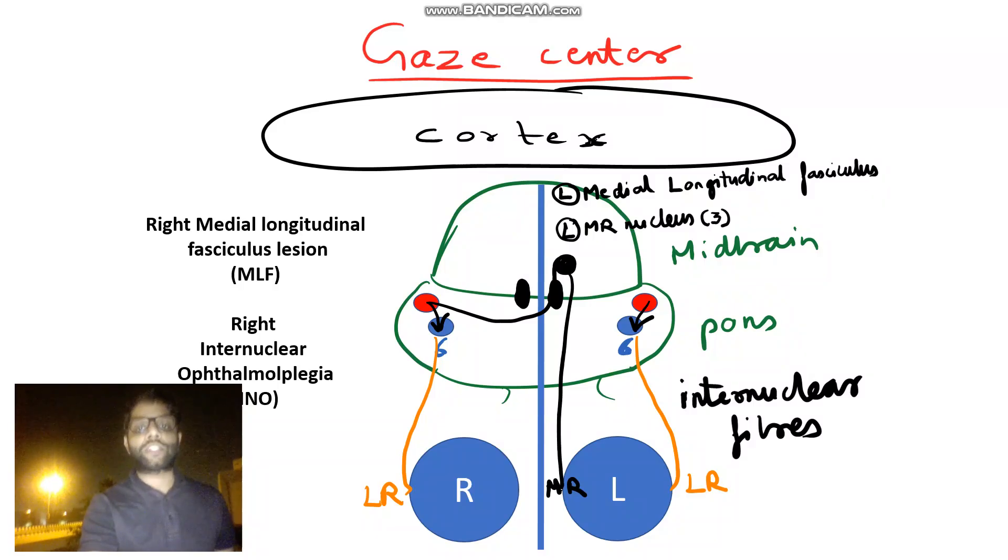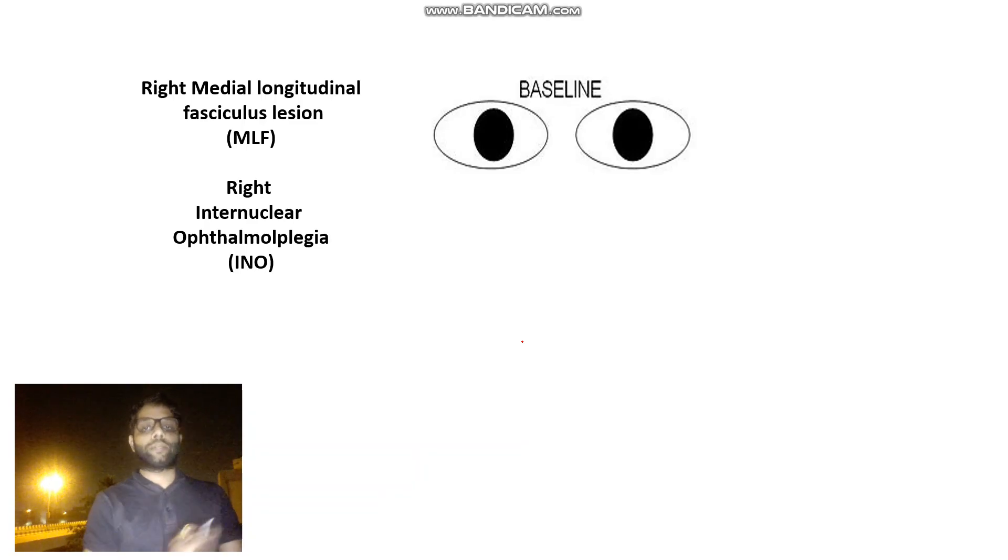If right MLF is destroyed, MLF is also known as internuclear. So if right MLF is destroyed, that is known as right internuclear ophthalmoplegia. What happens in this? Right MR will not work properly. But right third nerve is still functioning and left PPRF is still functioning. So some fibers from third nerve are still coming to MR. That is why in primary position, there will be no squint.